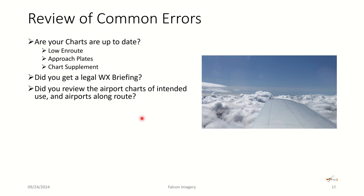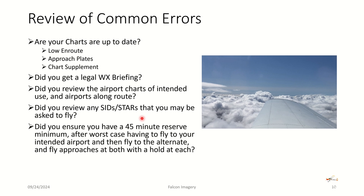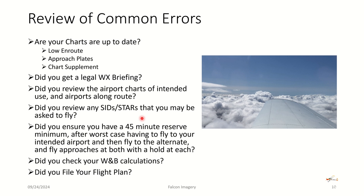Did you review the airport charts of intended use and airports along the route? You want to know the runway and taxiway lengths at both your departure and destination, and be aware of airports along your route you might divert to if weather gets bad or you have a mechanical issue. Did you review the SIDS or STARS you may be asked to fly? Did you ensure you have a 45-minute reserve minimum — worst case, after flying to your intended airport, then the alternate, flying approaches at both with maybe a hold at each, and still having that reserve? I typically like a minimum one-hour reserve on any IFR flight. Did you check your weight and balance? Did you file your flight plan? Those are the steps and common errors associated with IFR flight planning.